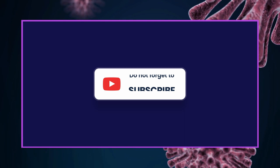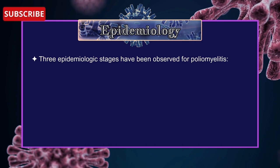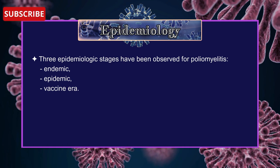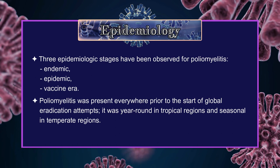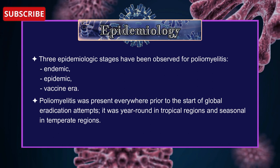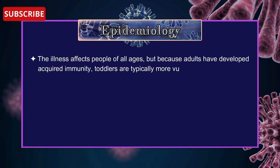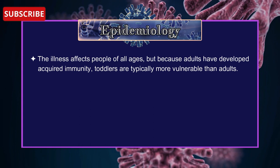Next is Epidemiology of Poliovirus. Three epidemiological stages have been observed for poliomyelitis: 1. Endemic, 2. Epidemic, and 3. Vaccine Era. Poliomyelitis was present everywhere prior to the start of global eradication attempts. It was year-round in tropical regions and seasonal in temperate regions. A winter epidemic was unusual. The illness affects people of all ages, but because adults have developed acquired immunity, toddlers are typically more vulnerable than adults.